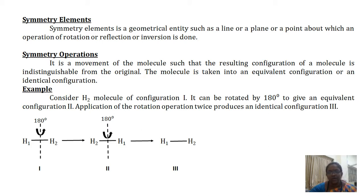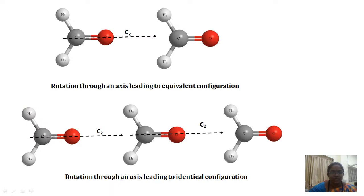The molecule is taken into an equivalent or identical configuration. For example, consider the H2 molecule in configuration 1 — it can be rotated by 180 degrees to give configuration 2. Applying the rotation operation twice produces the identical configuration 3. The image of formaldehyde (HCHO) shows that rotation through an axis can lead to either an equivalent configuration or an identical configuration.